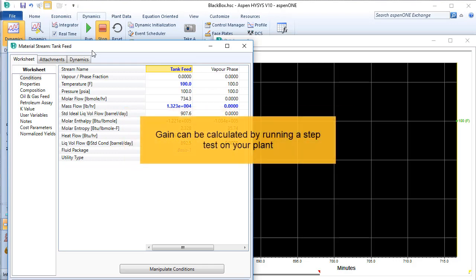If I didn't know the gain, I could input a step change to the plant and wait for the process to stabilize, then measure the corresponding change in the outlet.